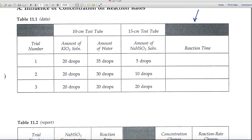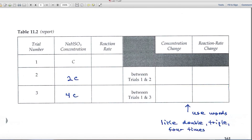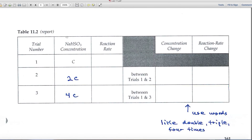Notice that one of the reagents here has five drops, ten drops, and twenty drops. If we let five be the value C, this would be twice as much, or 2C, and this would be four times as much, or 4C. That's what I've entered for you here in table 11.2 in the report.